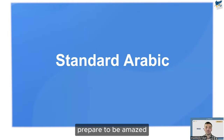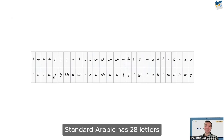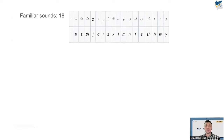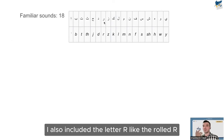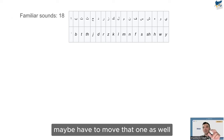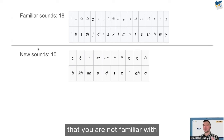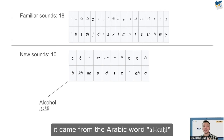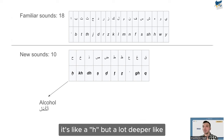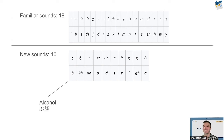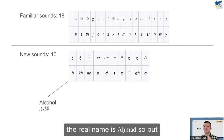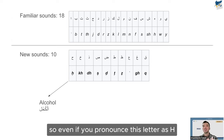Now for Standard Arabic — prepare to be amazed. Arabic has 28 letters. I'll divide the sounds into those you already know and those you'll need to learn. You already know sounds like b, t, th, j, and the rolled r. But there are around ten sounds you're not familiar with. The first one to learn is like 'h' but much deeper — from the throat, like when you cough. For example, the name Ahmad is actually not 'Ahmad' but 'Ahmad' with that deep sound. Even if you pronounce it as a regular 'h,' native speakers will understand you.